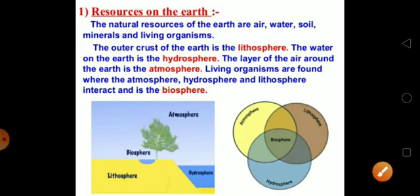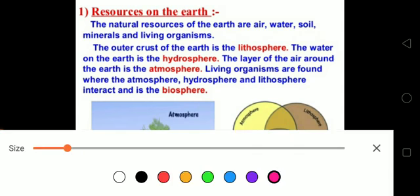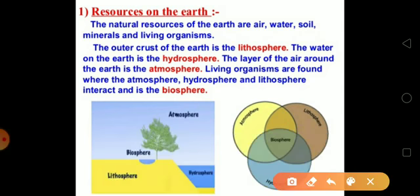Now, resources on earth. As we discussed, all variety of materials we get from nature to meet our basic needs are called natural resources. Like air, water, soil, all are the natural resources that we get from nature. They are obtained from the three components of the earth.